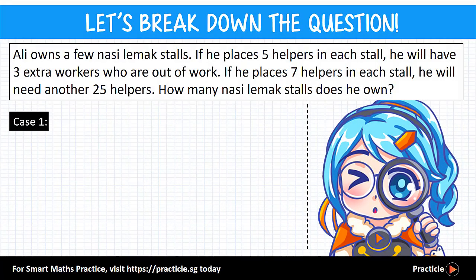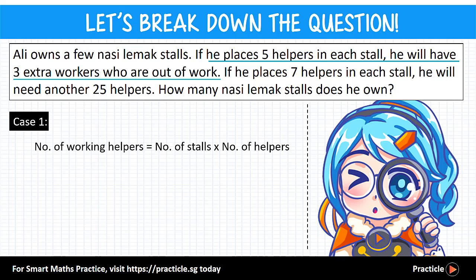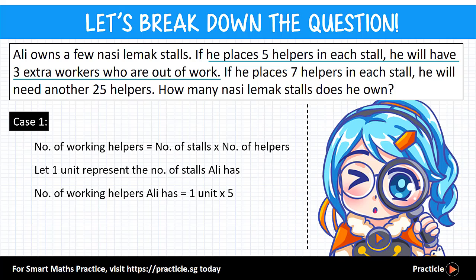We'll start by looking at each scenario separately. In the first case, if Ali places 5 helpers in each store, he will have 3 extra workers out of work. Since we don't know how many stores there are, let 1 unit represent the number of stores. The number of working helpers equals 1 unit times 5, which gives us 5 units. But we also have 3 extra helpers, so the total number of helpers Ali has is 5 units plus 3.